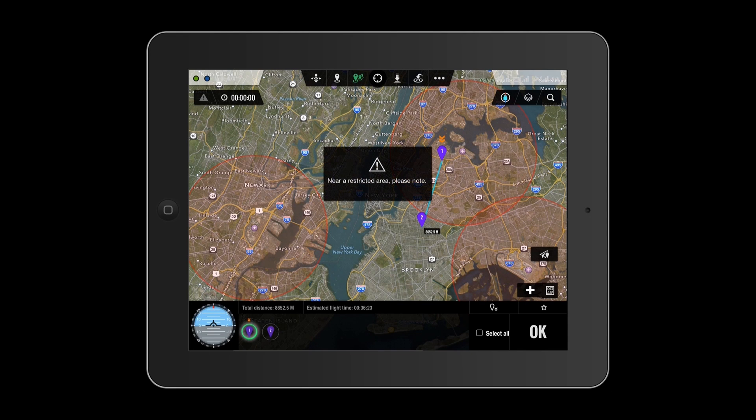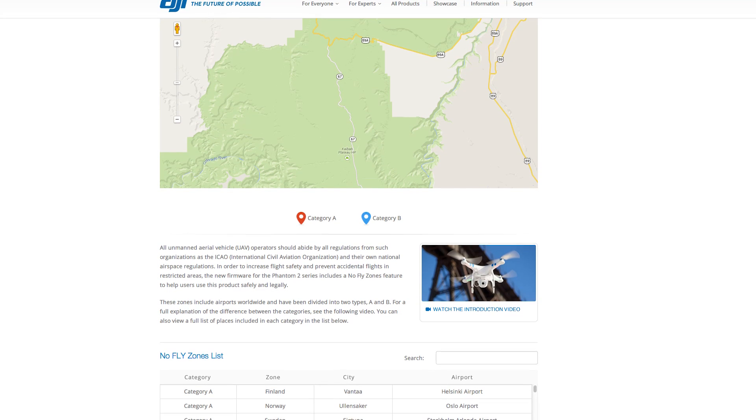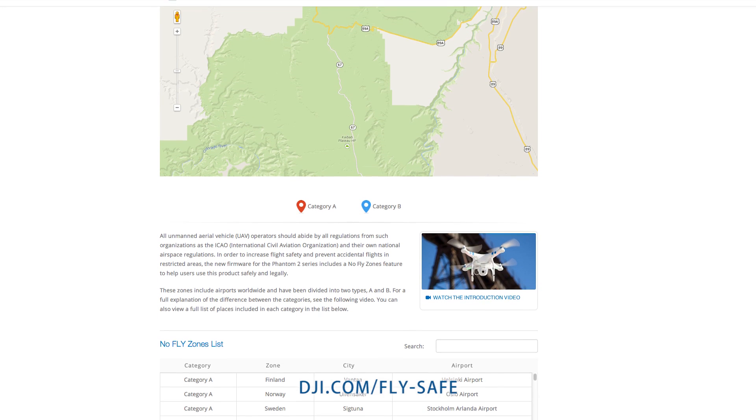The update will also prevent you from setting waypoints within 8 kilometers of safety zones. A map showing the waypoint safety areas can be found at dji.com.